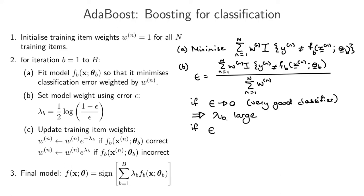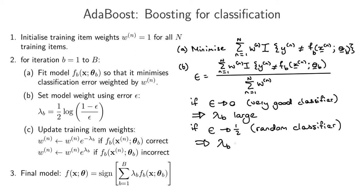A very bad, essentially random classifier has epsilon tending towards a half. What happens to lambda? We have one minus a half divided by a half, which is one, and the log of one is zero. So as the normalized error goes to a half, lambda B goes to zero. That's exactly what we want: if we have a good classifier we want a large lambda, and if we have a bad classifier — something that for the binary case is just flipping coins — then lambda B goes to zero.